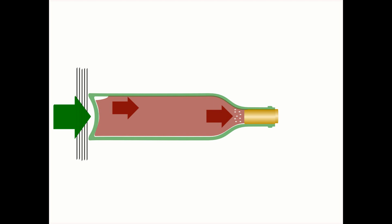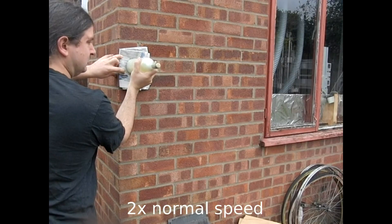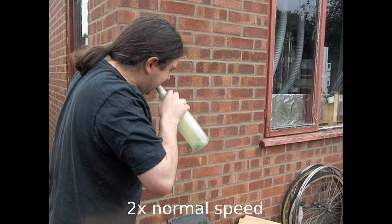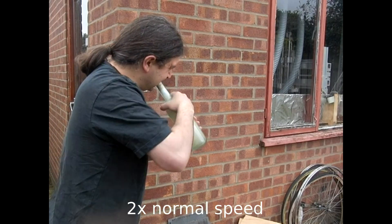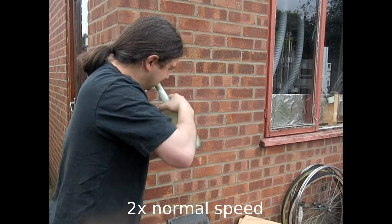They then collapse incredibly violently, and the wine carries on and bashes into the cork and pushes it out. Repeating the process several times, of course, bashes the cork repeatedly, and eventually it comes out far enough that you can take it out with your teeth.